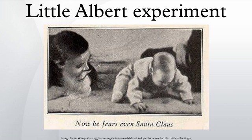Little Albert showed no fear toward any of these items during the baseline. Albert was then placed on a mattress on a table in the middle of a room. A white laboratory rat was placed near Albert and he was allowed to play with it. At this point, the child showed no fear of the rat. He began to reach out to the rat as it roamed around him. In later trials, Watson and Rayner made a loud sound behind Albert's back by striking a suspended steel bar with a hammer when the baby touched the rat.